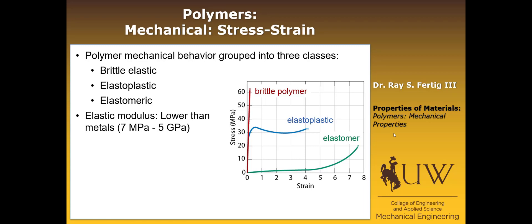Their elastic modulus, and they still have an elastic modulus just like metals do, but their elastic modulus is typically lower than metals, somewhere in the range of, let's say, 7 MPa, not GPa, MPa, up to about 5 GPa.